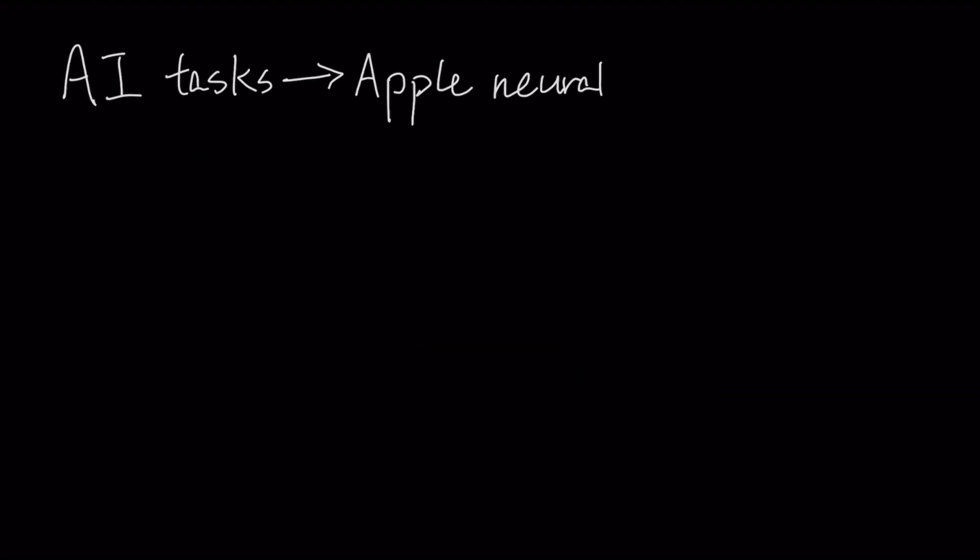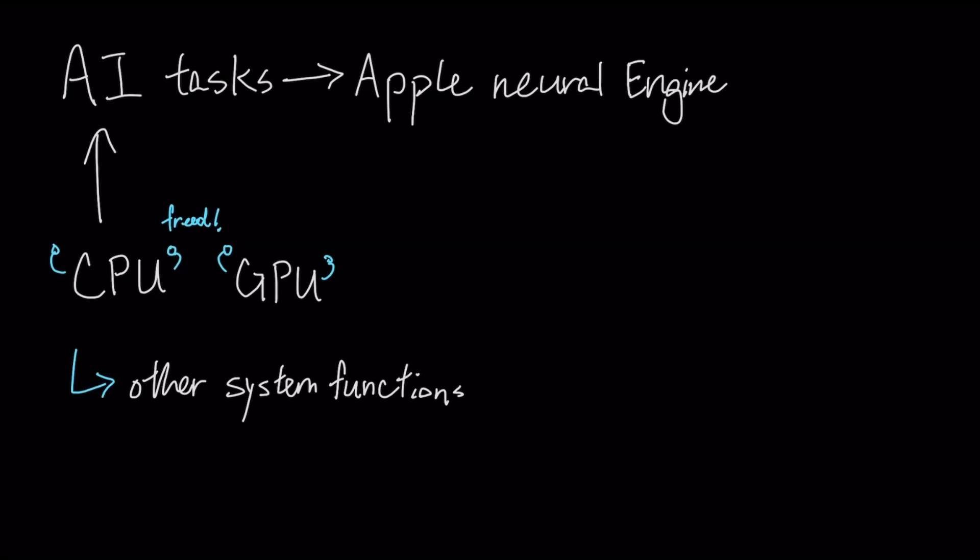By offloading AI tasks to the Apple Neural Engine, the CPU and GPU are freed to handle other critical system functions, preventing stutter and saving battery. The single most important system-level feature is Apple's unified memory architecture.